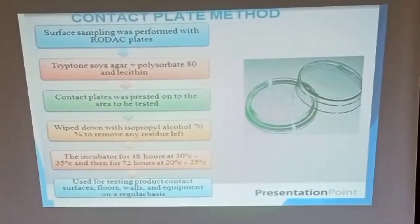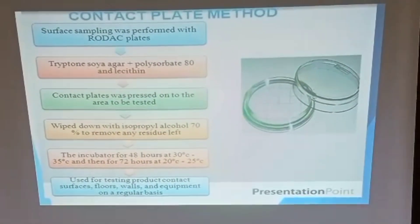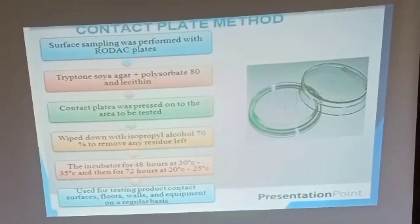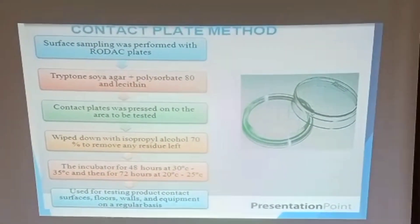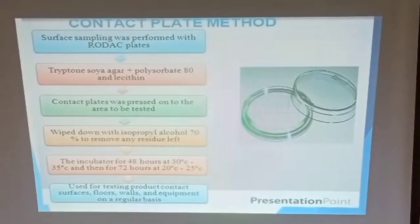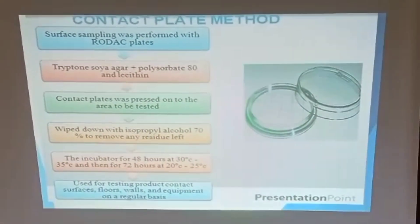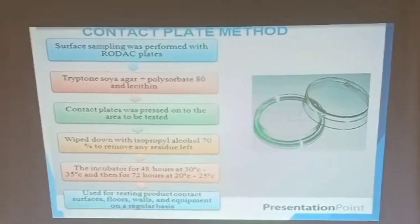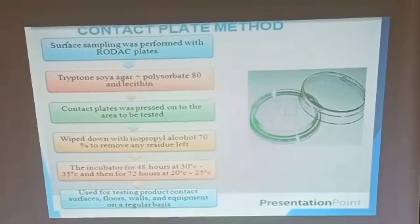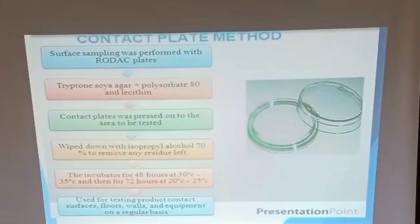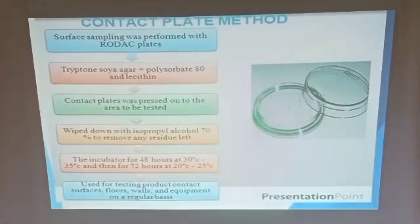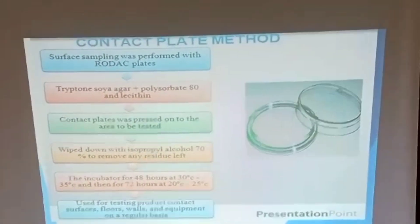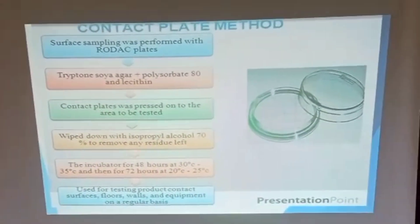After pressing the contact plate on the surface, the surface is wiped down with isopropyl alcohol or 70% absolute ethanol to remove any residue left after contact. The plates are then incubated for 48 hours at 30–35°C for bacteria, and 72 hours at 20–25°C for fungi. This method is used for testing product contact surfaces, floors, walls, and equipment on a regular basis.